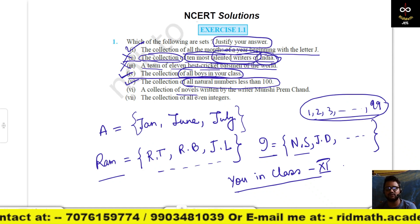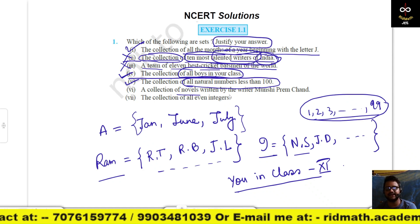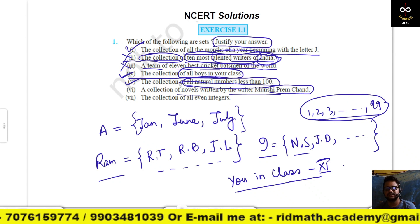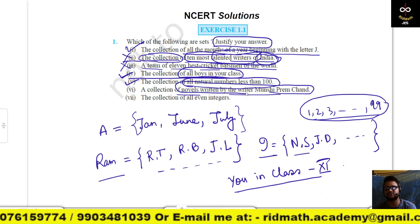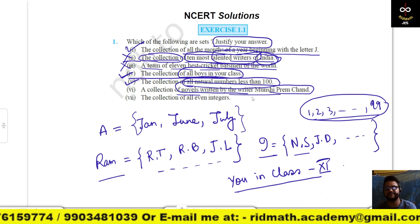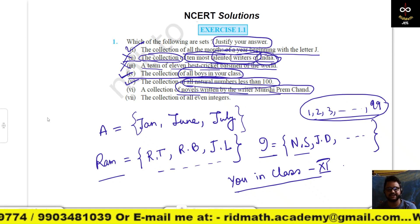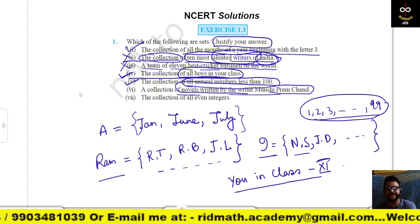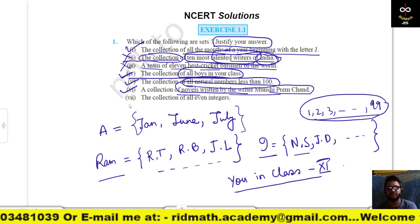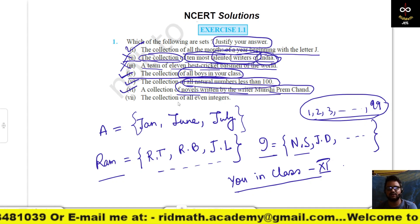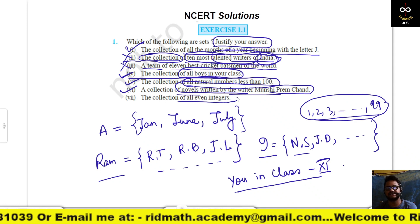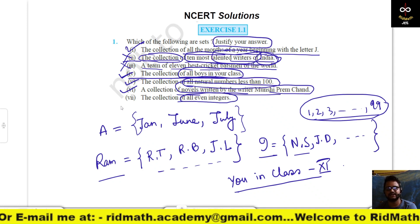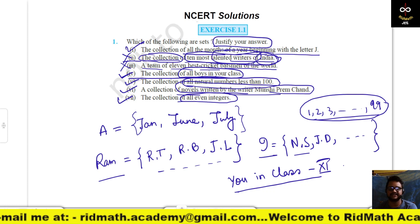A collection of novels written by writer Munshi Premchand — this is also a well-defined collection and it makes a set. Next, the collection of all even integers — this is also a well-defined collection, so this makes a set.